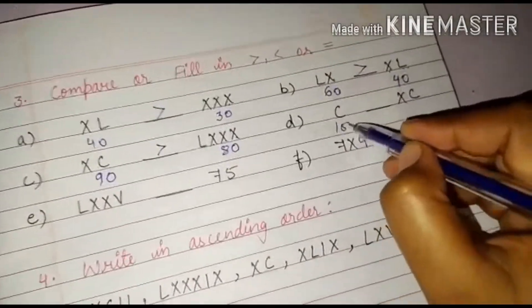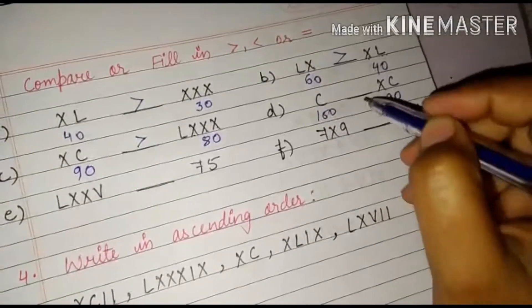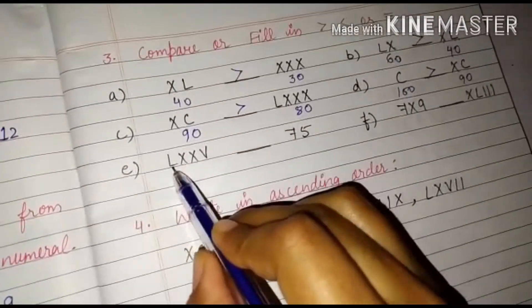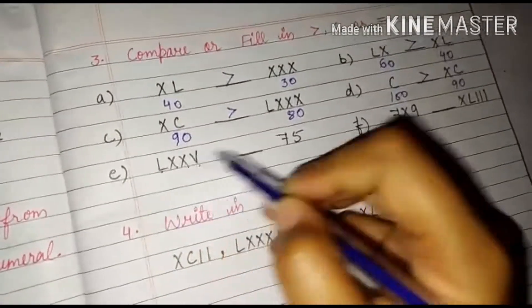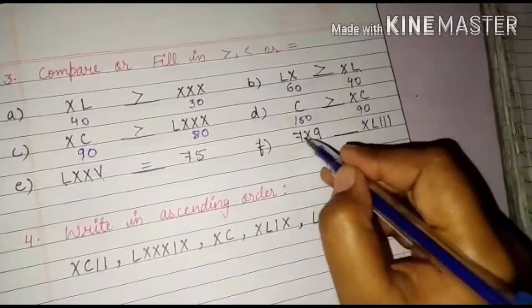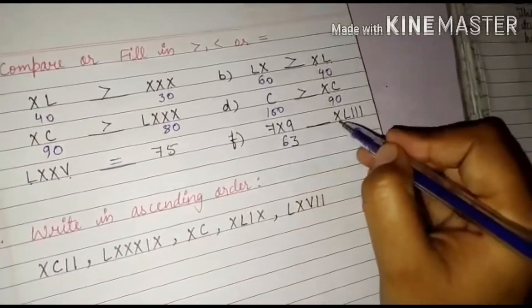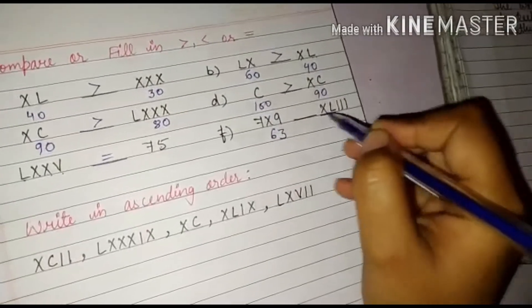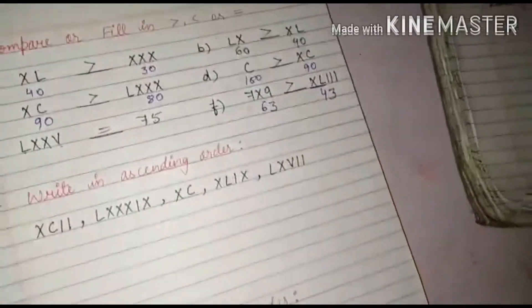C and XC. C is our 100. And XC is our 90. So which is greater? C is greater. Now in this case, 50, 60, 70, 75. And it is also 75. So I will mark an equals sign here. Seven nines are 63. And it is XL is 40, and 3. So 43. So what is greater? 63 is greater.